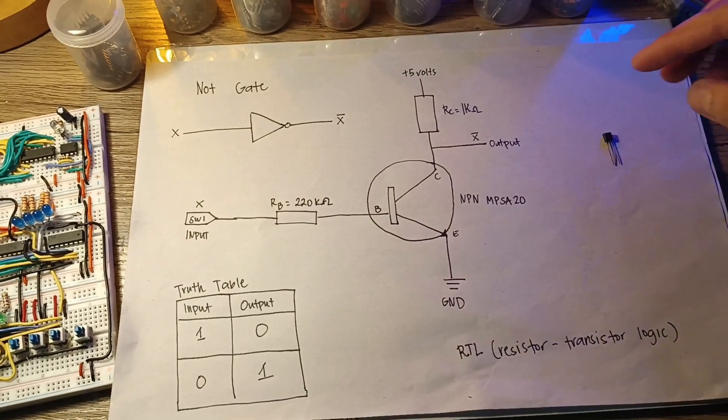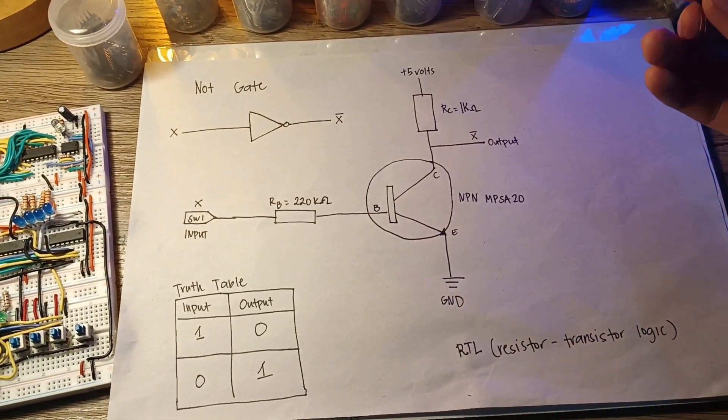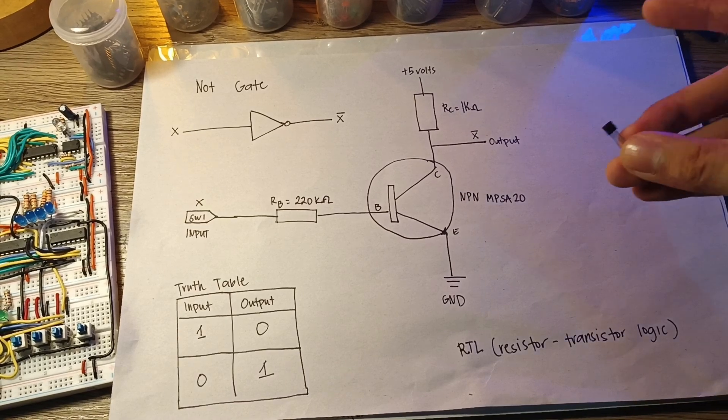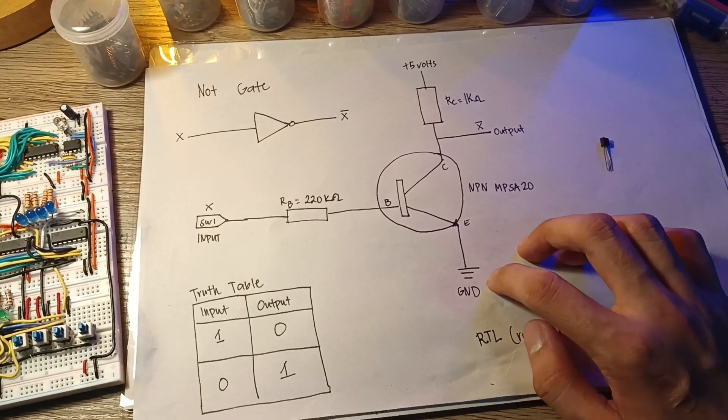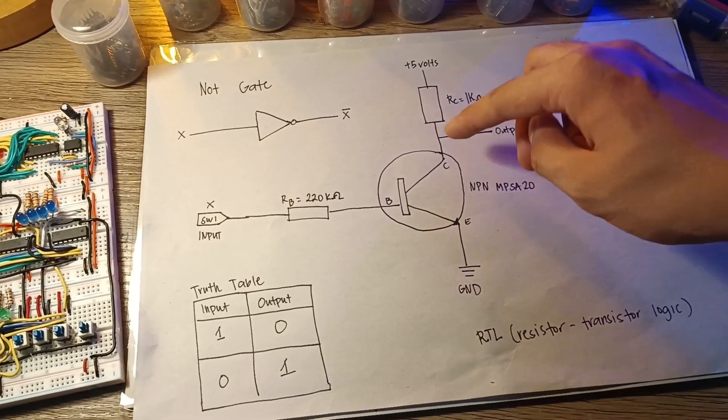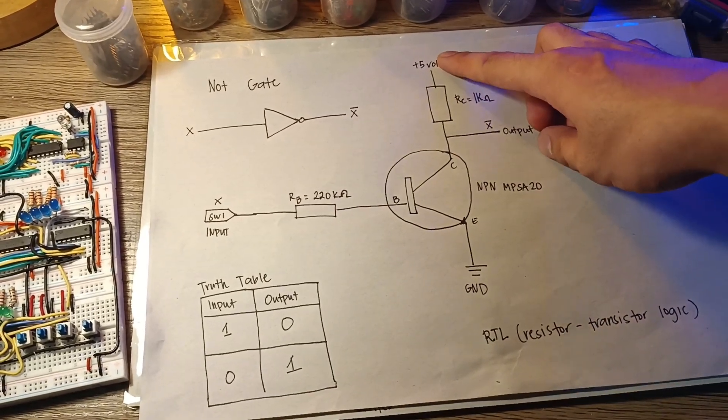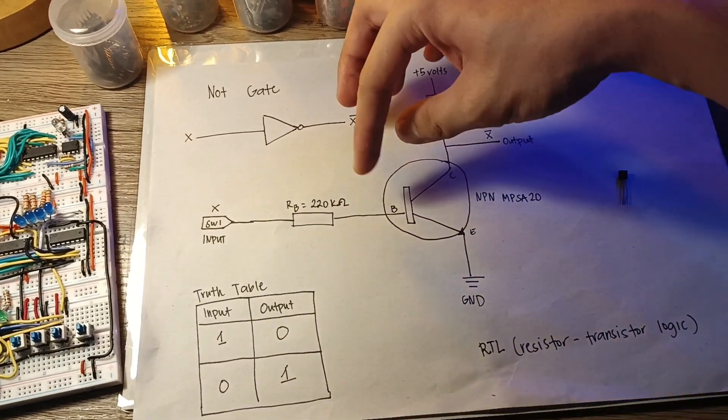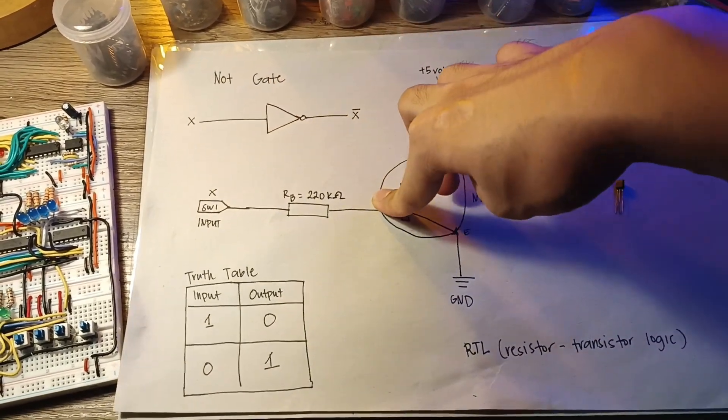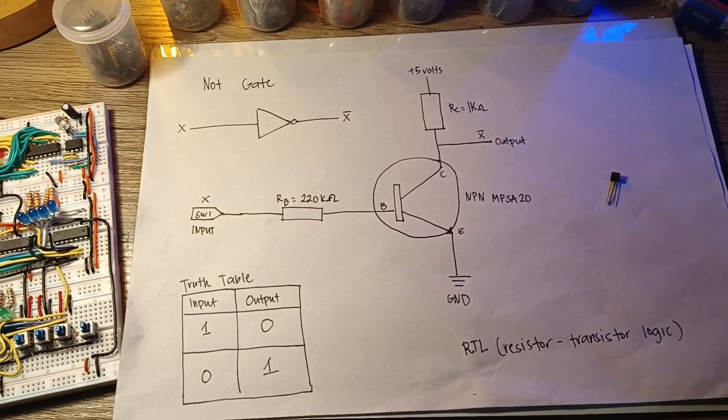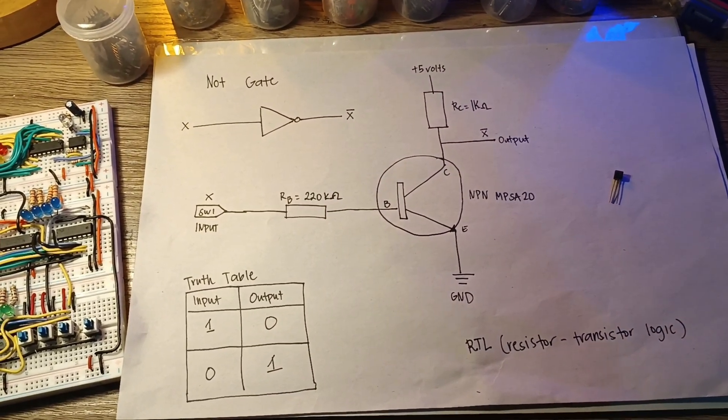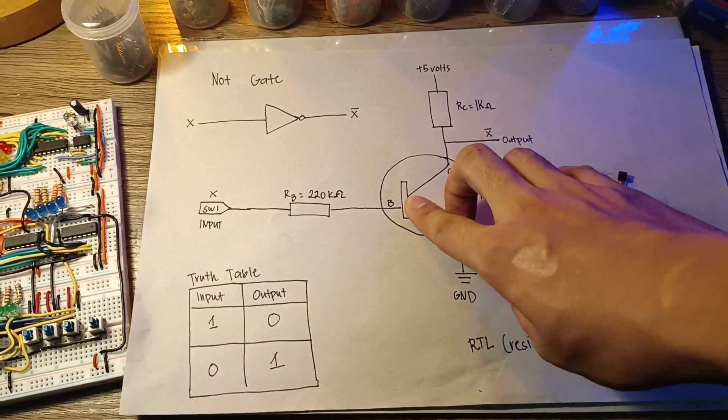To use the MPSA-20 as a NOT gate, you typically connect the emitter to the ground, the collector to the power supply, and the input signal to the base. The transistor operates in the cutoff, active, or saturation region based on the input voltage at the base.